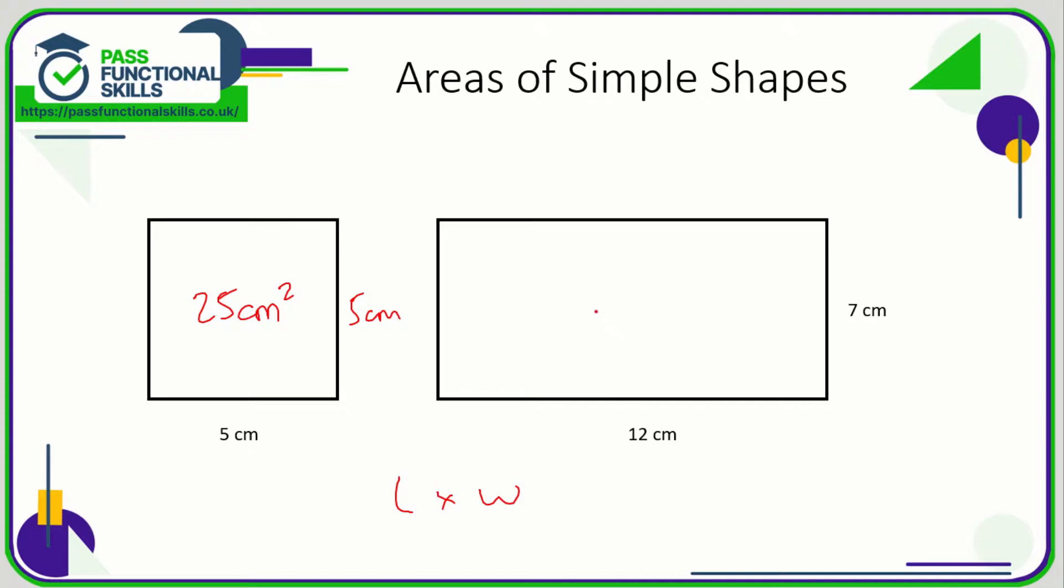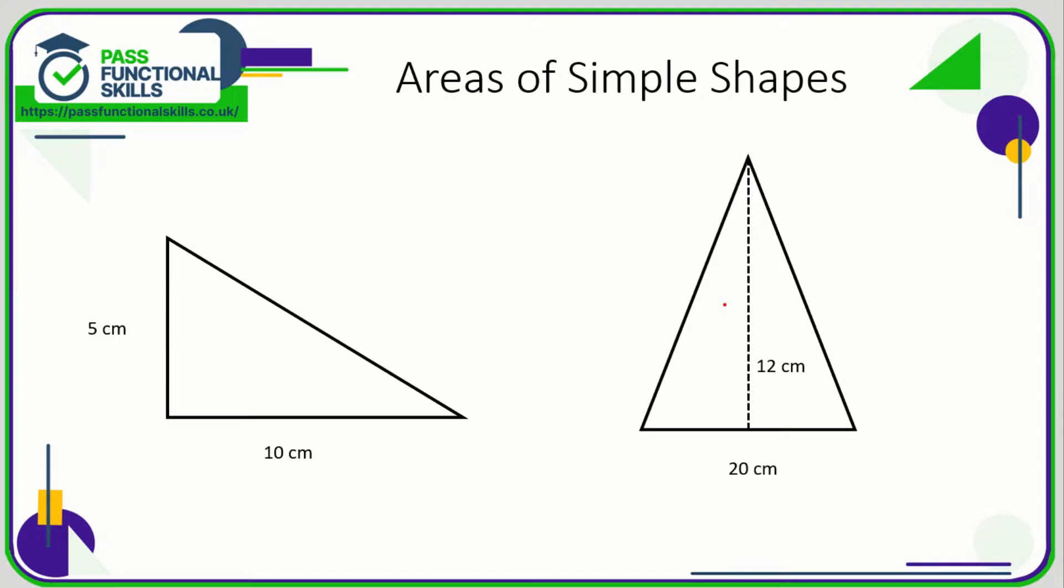Now for a triangle, the formula for the area of a triangle is half the base times the height, or base times height divided by 2. In fact, this second formula is probably easier to use.